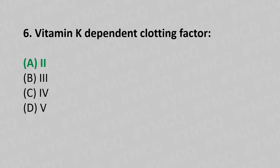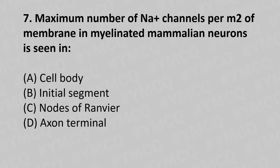Moving to our seventh question. Maximum number of sodium channels per meter of membrane in myelinated mammalian neurons is seen in: Option A, cell body. Option B, initial segment. Option C, nodes of Ranvier. Option D, axon terminals. And the answer is Option C, nodes of Ranvier.